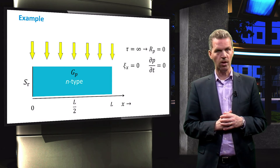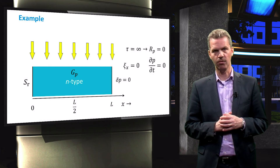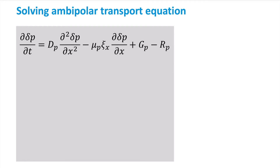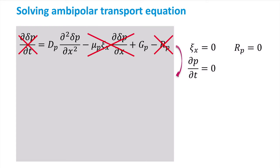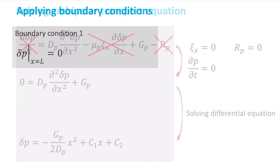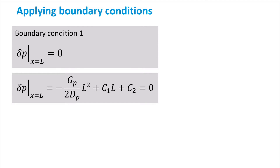The left-hand surface is characterized by surface recombination velocity S_R, and we state that at the right-hand surface the excess carrier density is zero. We will now solve the ambipolar transport equation for this problem. First, we can remove several terms from the equation because these are equal to zero. We then obtain the following reduced differential equation, and solving it results in the following solution, where c1 and c2 are integration constants. We now apply the first boundary condition, which states that the excess hole concentration for x equal to L is equal to zero.